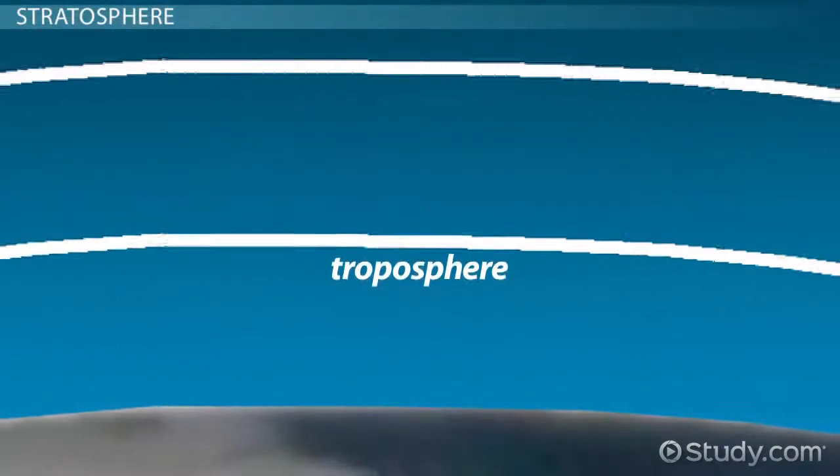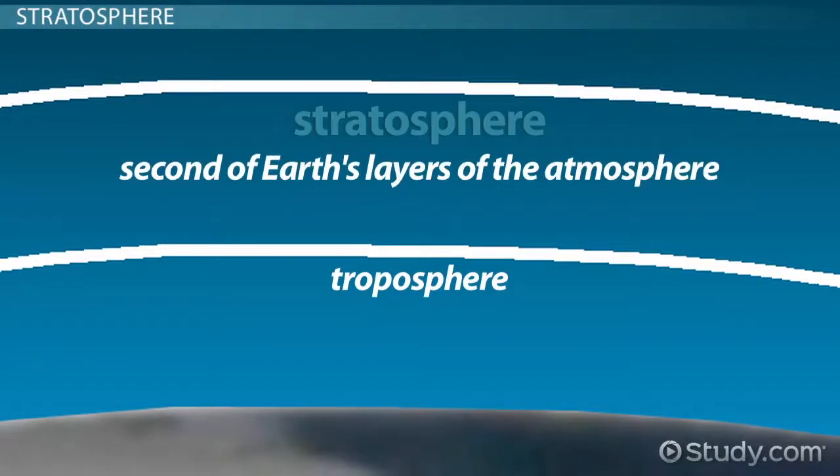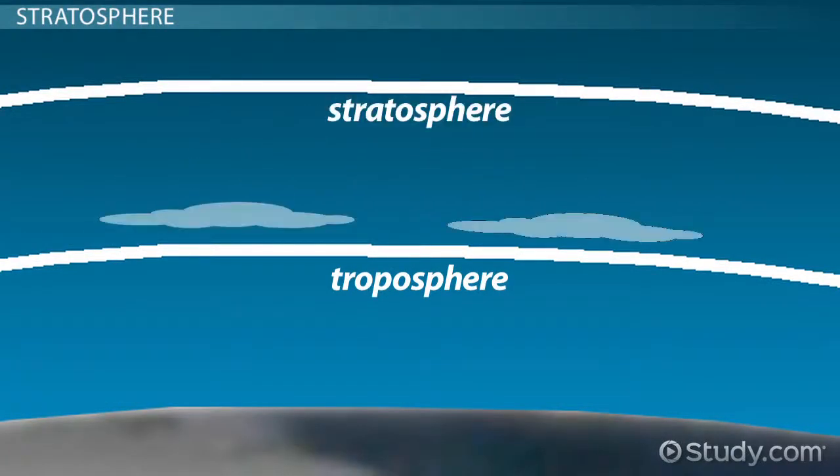Continuing upwards, and you'll be in the stratosphere, the second of Earth's layers of the atmosphere. Here you'll find a few clouds, but the fact is that most of the weather takes place in the troposphere. Instead, you'll find only two real markers of human activity in the stratosphere.